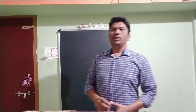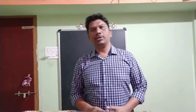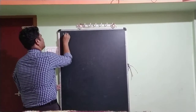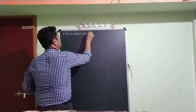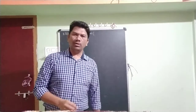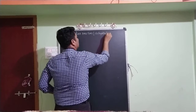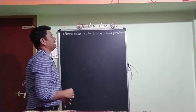Good evening students. In this video I am going to discuss the last chemical property of alkyl halide, that is elimination reaction. Elimination means it is a removal reaction — dehydrohalogenation.